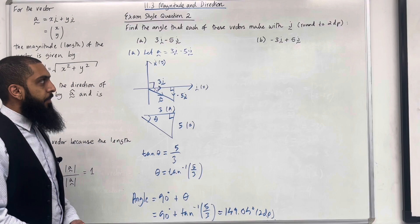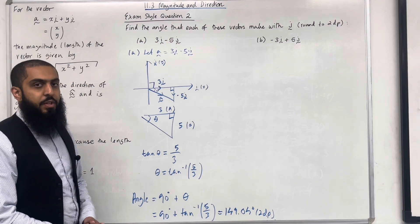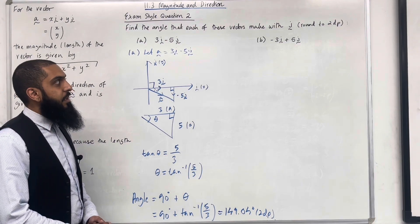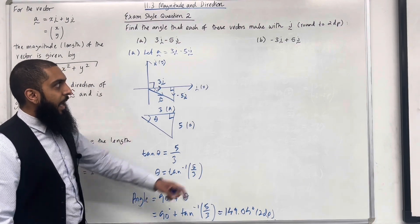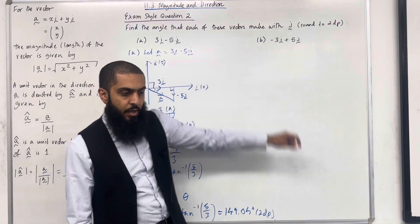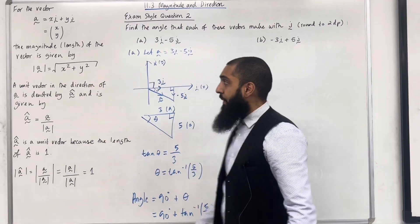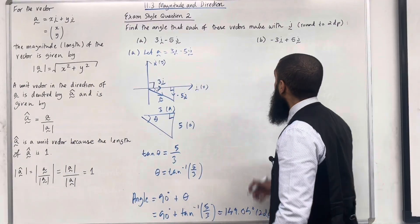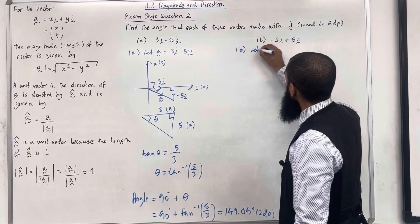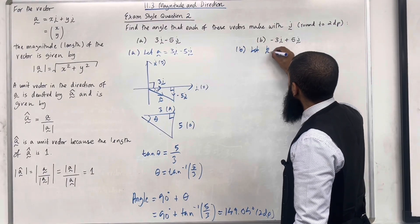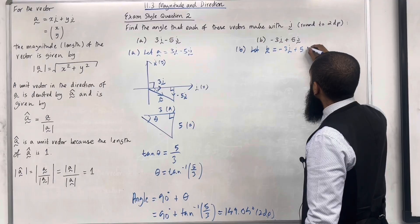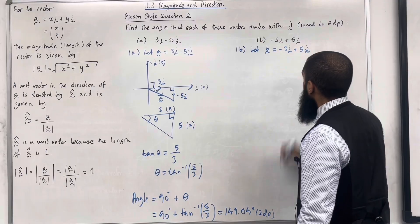Let's move on to part B. Now we want to work out the angle between unit vector j and the vector −3i + 5j. In part B, I'll let vector B = −3i + 5j. I'll draw this vector on a coordinate grid.